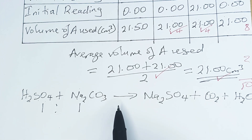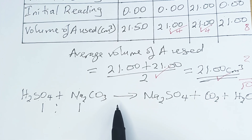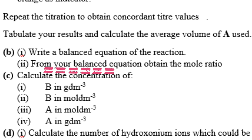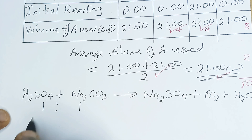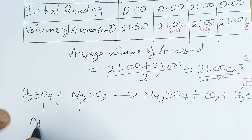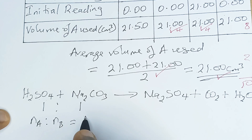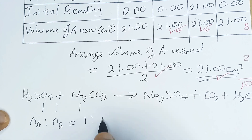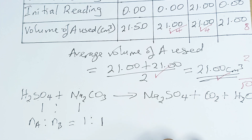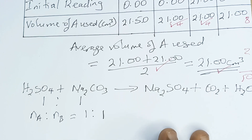Because if we look at question Roman figure 2 — even if they didn't ask you the question, you must do it. They said from your balanced equation obtain the mole ratio. The mole ratio is very, very compulsory and it always carries marks every year. So you have to state: NA ratio NB is equal to 1 ratio 1. Very, very important.